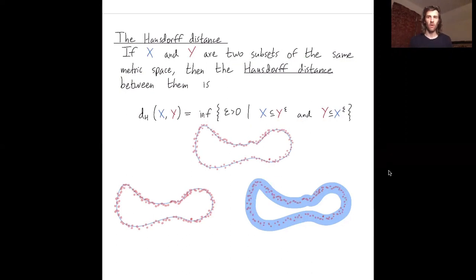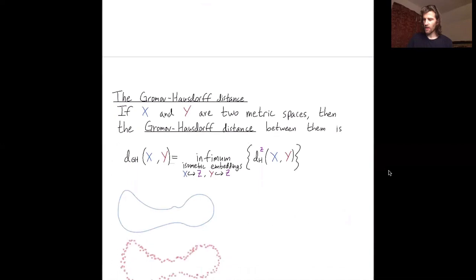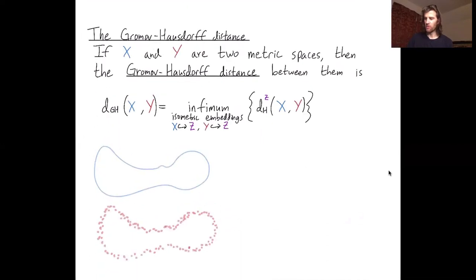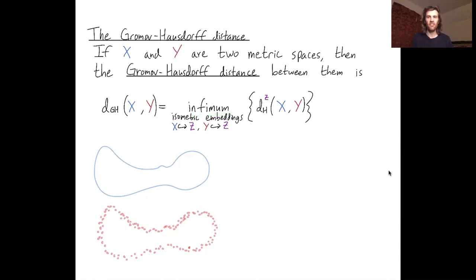The Gromov-Hausdorff distance is what we're going to see next. The Gromov-Hausdorff distance will be defined not only for subsets of the same metric space, but just for two arbitrary metric spaces. The Gromov-Hausdorff distance between two metric spaces x and y looks at an infimum over all isometric embeddings from x into a common space z and from y into that same common space z. Then once we have aligned x and y in z, we just look at the Hausdorff distance in z.